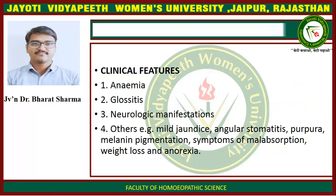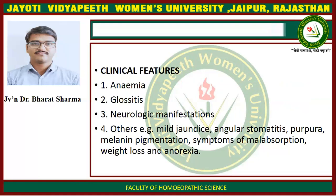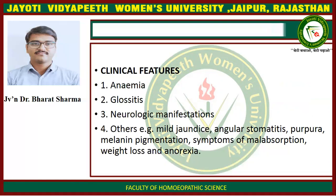Clinical Features: First is anemia. Second is glossitis. Third is neurologic manifestations. Others may include mild jaundice, angular stomatitis, purpura, melanin pigmentation, symptoms of malabsorption, weight loss, and anorexia.